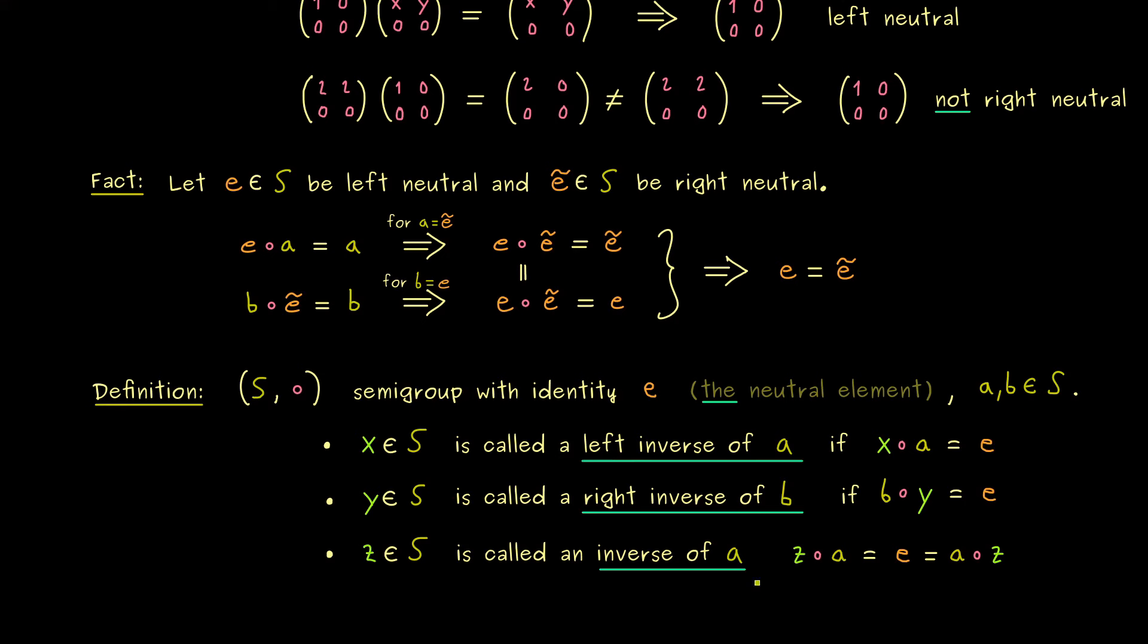Moreover I should also tell you that in the first two definitions A and B also get names. First A is called left invertible and B is called a right invertible element. So this makes sense and maybe to avoid confusion let's use another letter here in the last equality.